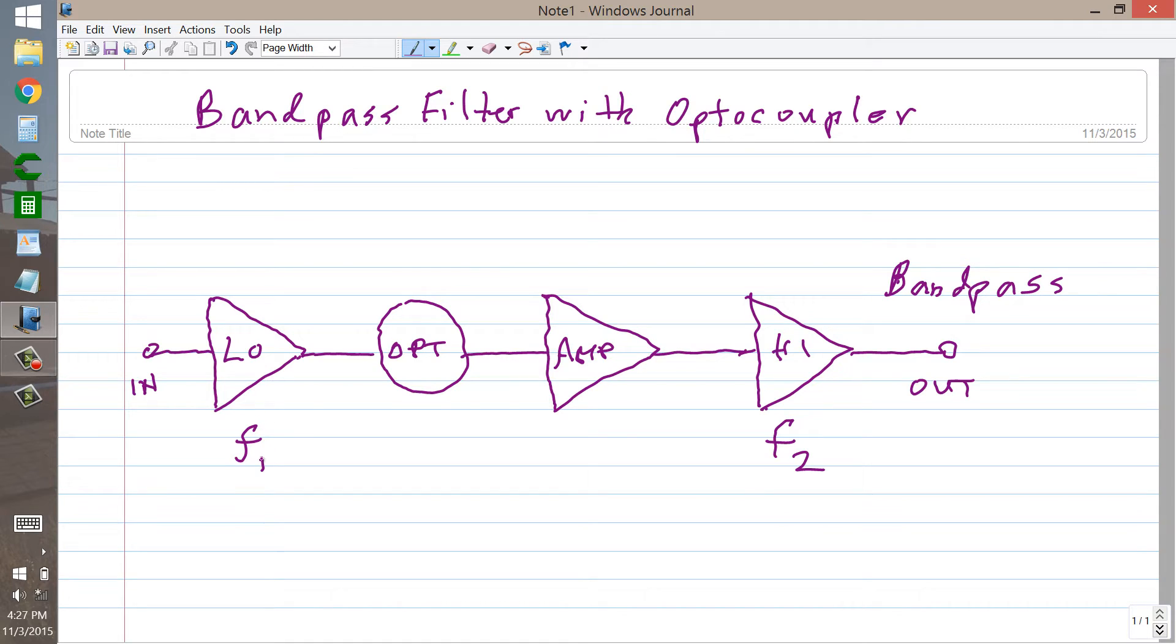This has a response curve that looks something like this, frequency increasing from left to right, amplitude response vertically, you get the drift, right? And the high pass filter, of course, just the reverse, as you increase the frequency, the response improves at a certain cutoff frequency, which is right about here.